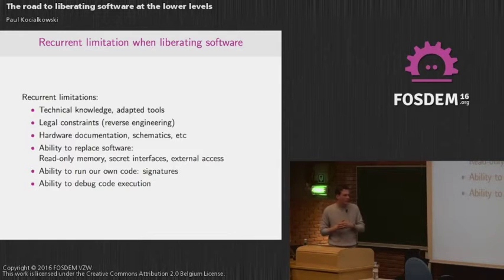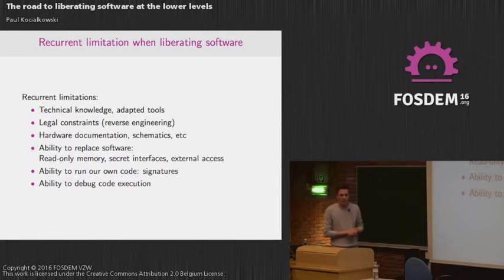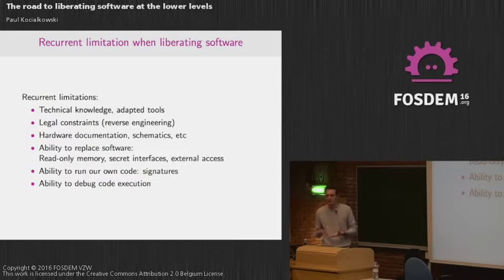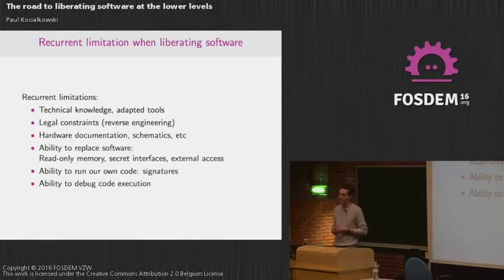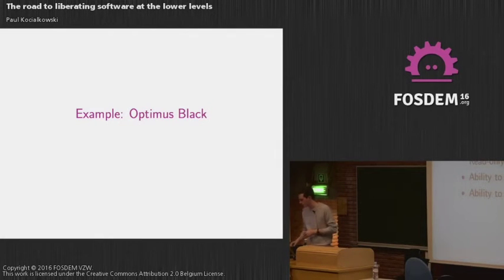This means in practice you cannot install your own version of the software and you cannot modify it. Even if you have the full source code and can build it, you won't ever be allowed to install it because you don't have the private key that only the manufacturer has. That's a very big problem — it's actually getting worse and worse every year. And finally, even when you're able to run your code, you still need some ability to debug it and get feedback, because you cannot just load code and expect it to work on the first try. You need debug interfaces.